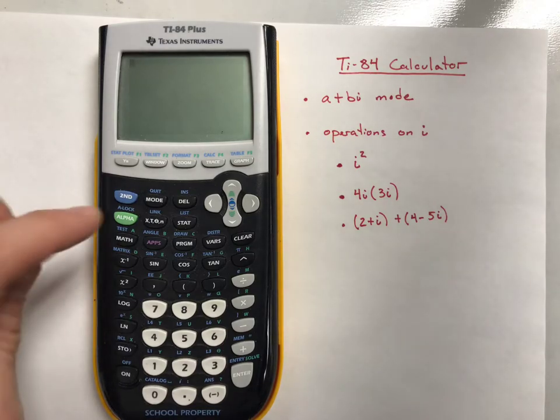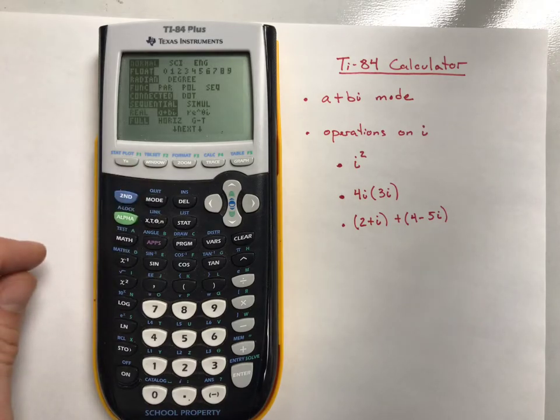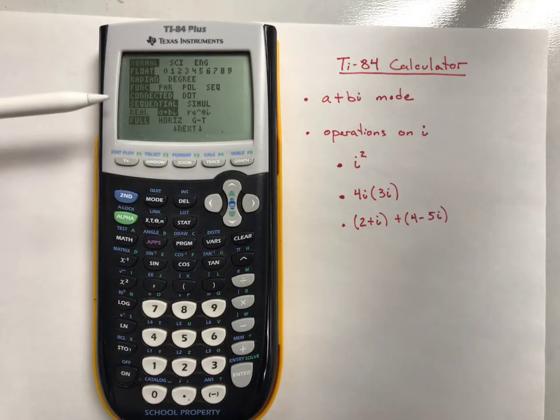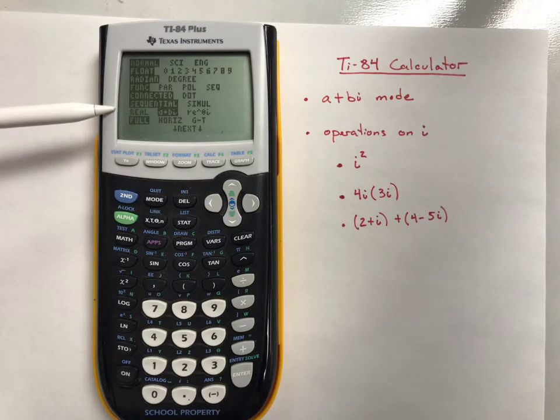So first of all, the big thing is you need to hit your mode button. If you go down, you'll see this spot that says real or A plus BI. These are the only two that we're going to be using in most of our high school courses.